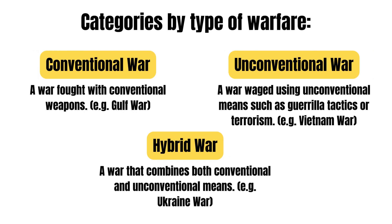Furthermore, you can categorize them by type of warfare. Conventional wars are fought with conventional weapons — for example, the Gulf War. Unconventional wars are waged using unconventional means such as guerrilla tactics or terrorism — for example, the Vietnam War.